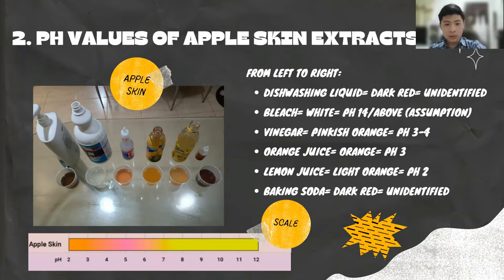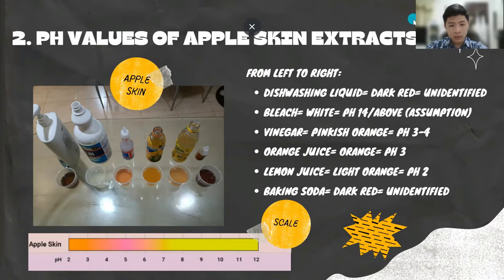For the lemon juice, it turned light orange. Based on the scale, it has a pH value of 2, so it's a very strong acid. For the baking soda, like the dishwashing liquid, it produces a dark red color which is unidentified.